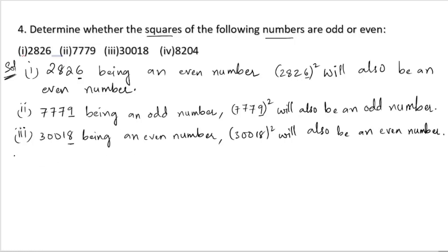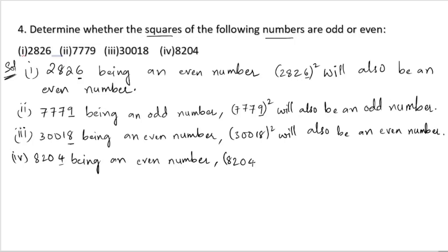For the fourth number, 8204, the last digit four indicates it is an even number. The square of four is 16, so 8204 squared will also be an even number.